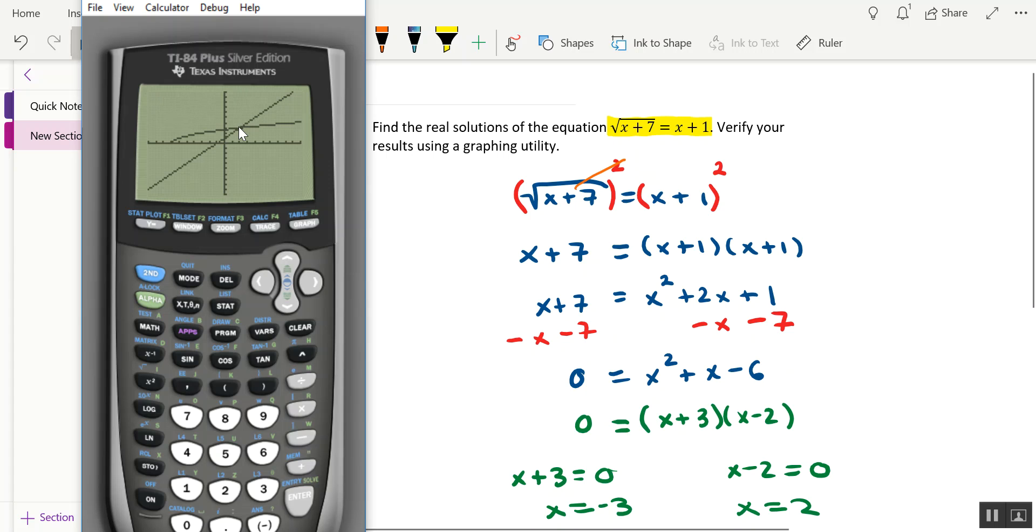Yeah, we're not seeing any point of intersection that would have a negative x-coordinate, so we can probably tell, just based on this, negative 3 is extraneous. All right, well, let's go ahead and verify that x equals 2 is the actual solution via the graphing calculator, so we're going to use the intersect feature now.